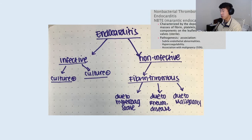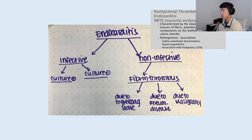Non-infective endocarditis is also known as marantic endocarditis or non-bacterial thrombotic endocarditis (NBTE). There are three main causes: it could be due to a hypercoagulable state — often you think of antiphospholipid antibody syndrome — it could be due to rheumatic disease, or it could be due to malignancy, with pancreatic cancer being one of the more common ones that causes NBTE.